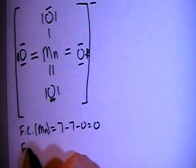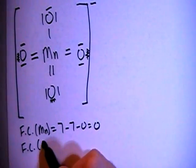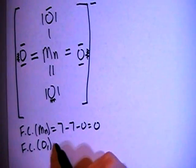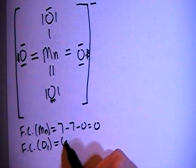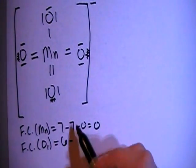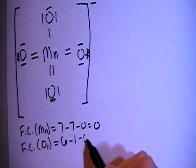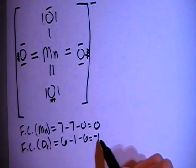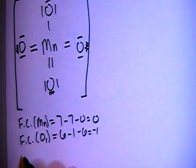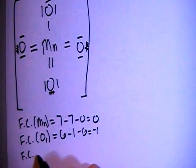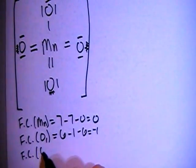Now the formal charge on, let's say, the oxygen with a single bond, so O sub 1, that's 6 valence brought in minus 1 bond minus 2, 4, 6 non-bonding electrons for a formal charge of negative 1.